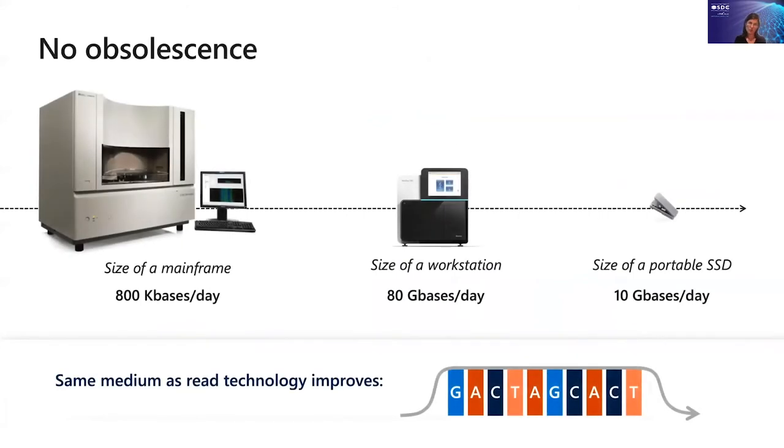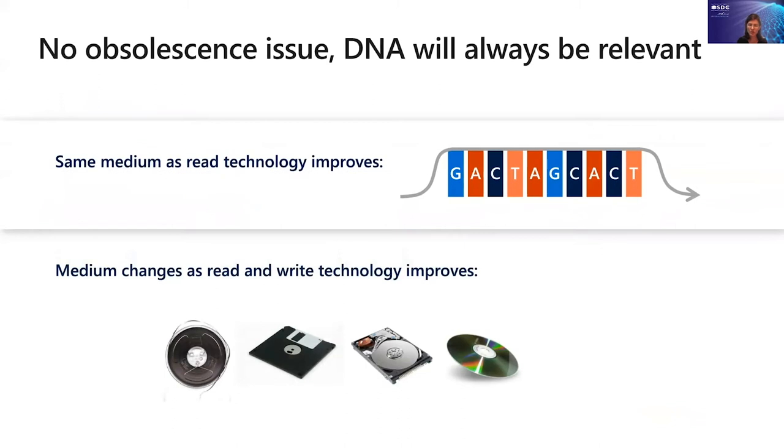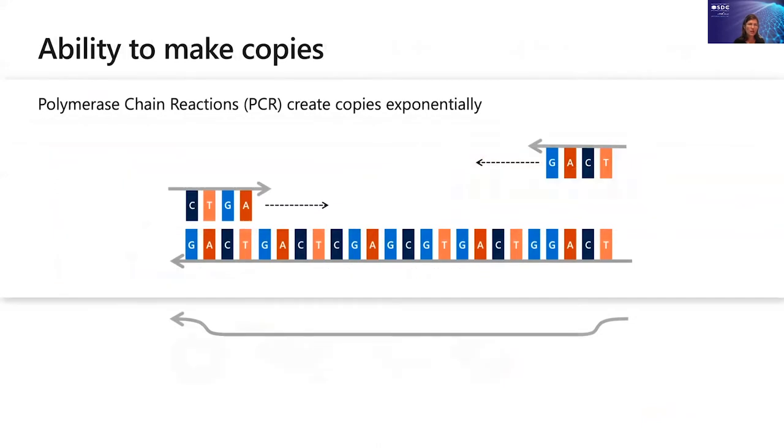Next is relevance. Now that we know how to read DNA and we use it to read our genomic DNA, we always have readers to recover the information that we store, the digital information that we store in synthetic DNA. We can essentially ride all the improvements that the biotechnology industry has been making to our benefit. What's interesting about DNA is that the medium doesn't change. So as we improve the technology, we don't need to migrate to the next generation of media. That actually makes it even more relevant and reduces some of the headaches that we typically have in doing migration.